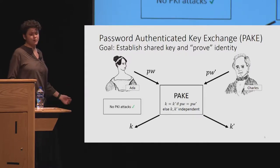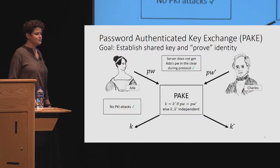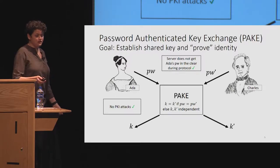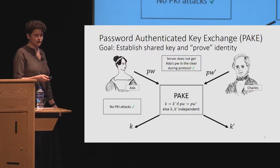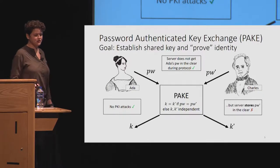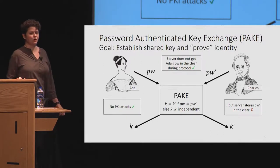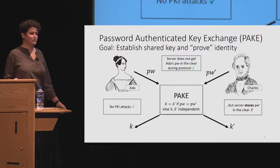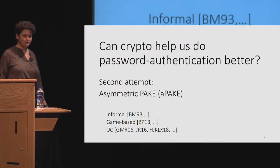The good things about PAKE: no PKI attacks because there's no PKI, so we're good for that problem with TLS. And Charles doesn't get Ada's password in the clear during the protocol because it's a secure computation, so her password is private. But in order to be a server, Charles needs to store the password on his server that he inserts into the protocol. So we have an even worse problem — the server is storing a password in the clear, not just for a couple seconds, but for a long time.